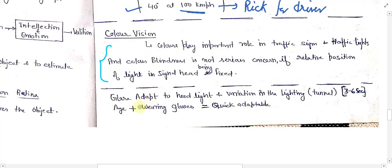Inside color vision, there is also glare adaptation. Normally glare adaptation takes three to six seconds; it depends on age and can be removed by special glasses used in night driving. It occurs when headlights come directly into your eyes or when you are moving inside a tunnel and suddenly exit — then glare adaptation takes three to six seconds.